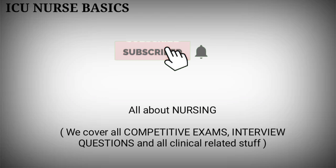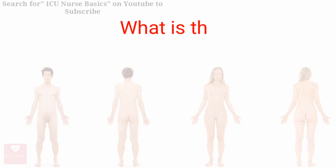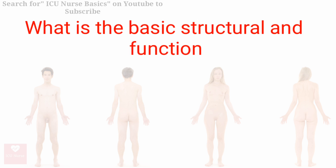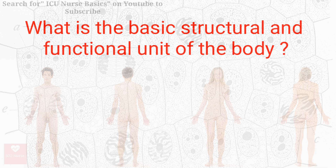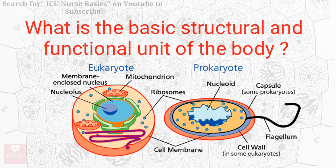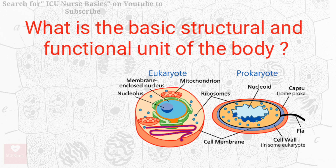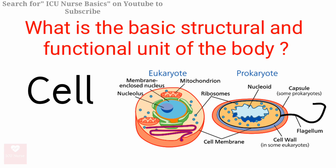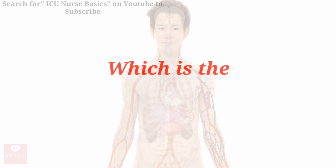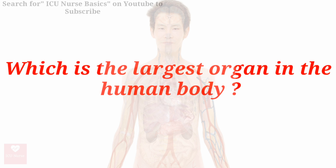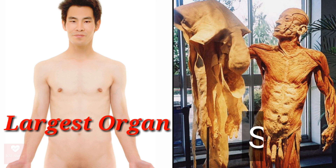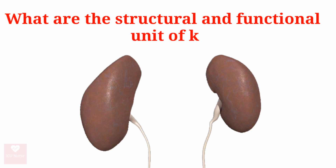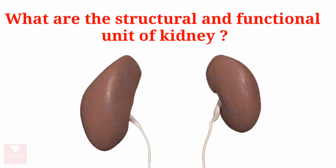By subscribing to our channel. What is the basic structural and functional unit of the body? The basic structural and functional unit of the body is the cell. Which is the largest organ in the human body? The largest organ in the human body is the skin.